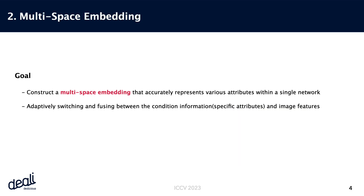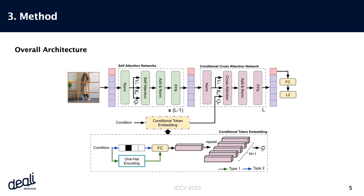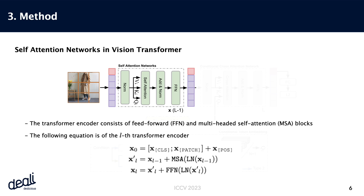Our primary goal is to construct a multi-space embedding that faithfully represents a wide array of attributes within a single network. Within the vision transformer framework, the transformer encoder is comprising feedforward and multi-headed self-attention blocks. As can be seen from the equation, the way we process input images closely resembles the conventional vision transformer approach.